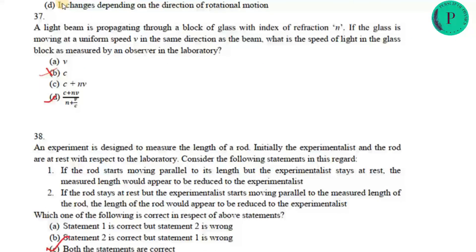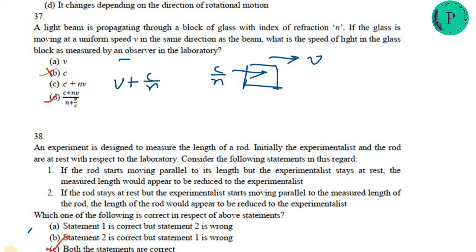The next question involves light propagating through a glass block of refractive index n, with the glass moving at uniform velocity v in the same direction as the beam. The speed of light inside the glass is c/n. Using the relativistic velocity addition formula: (v + c/n) / (1 + v·(c/n)/c²). After simplification you get option D as the answer.